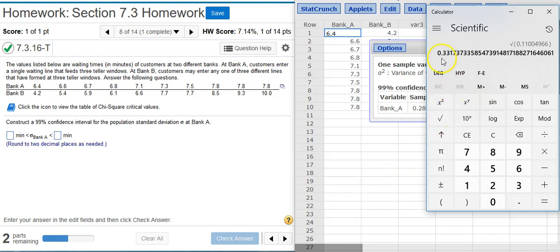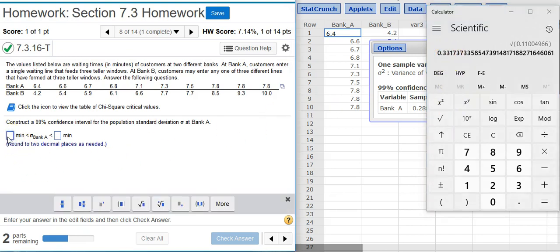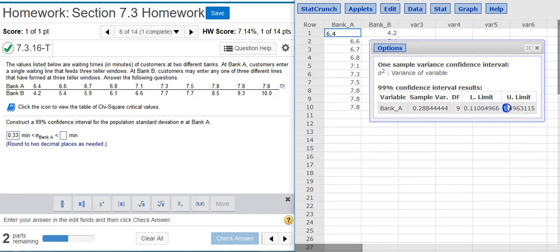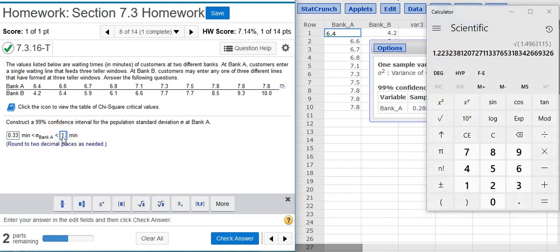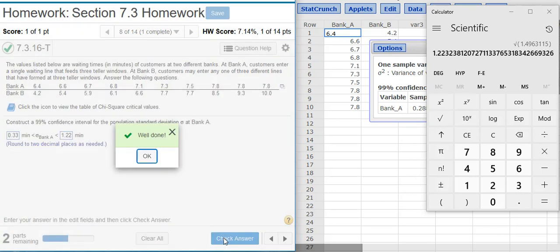and here we want to round to two decimal places. So now we have 0.33 for the lower limit. I repeat the procedure again for the upper limit. Now that I have both those limits in, I check my answer. Well done!